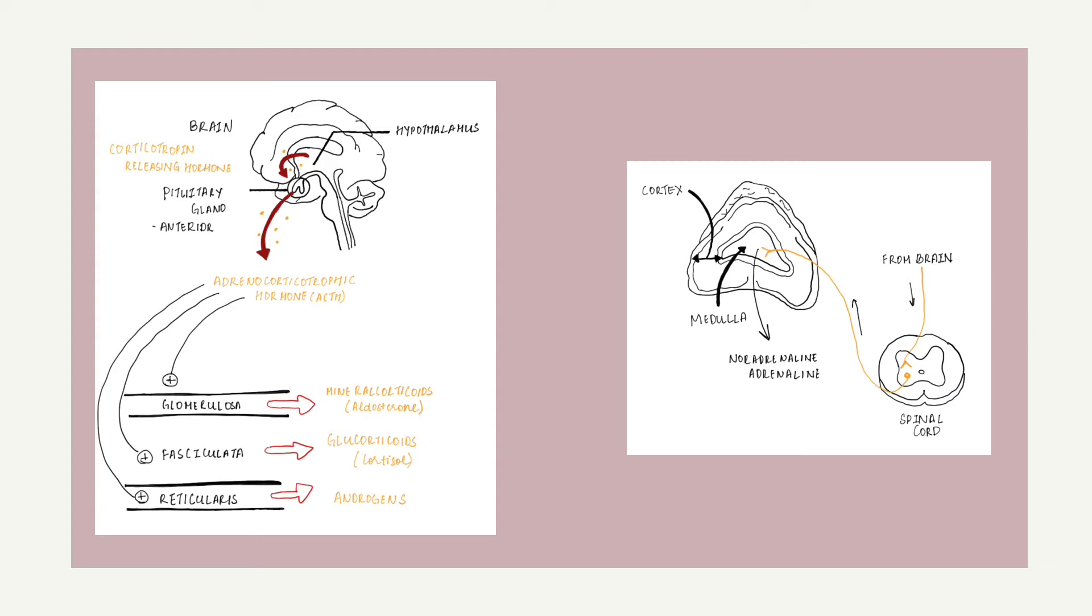The corticosteroid hormones can be divided into three main classes according to the layer of cortex from which they are produced. Zona glomerulosa produces the first class of hormones called the mineralocorticoids. The principal mineralocorticoid is aldosterone, which maintains the right balance of salt and water while helping control blood pressure.